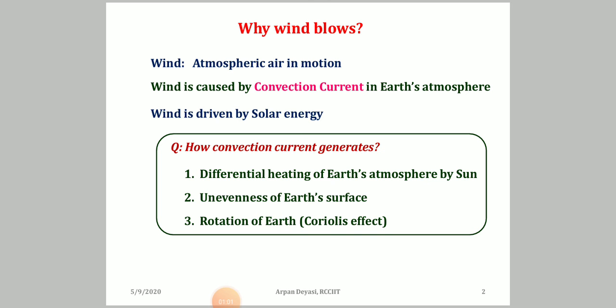Wind is caused by convection currents in the earth's atmosphere. Convection currents are generated because solar energy heats the atmosphere unevenly — different layers have different levels of heating, so air pressure varies, causing the flow of wind. Only two percent of the solar energy reaching earth is enough to generate this differential heating and create convection currents in the earth's atmosphere.